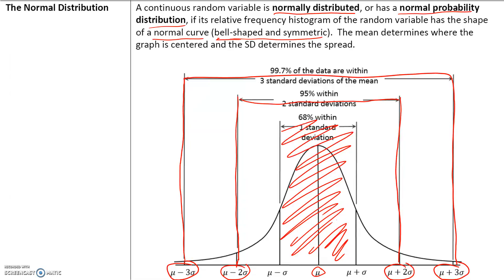For example, the average height of a male in the United States is approximately five feet ten inches. Someone who is seven feet six inches tall does not fall within the 99.7% range — they are more than three standard deviations from the mean and represent an extreme outlier.